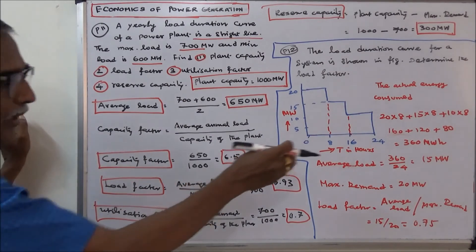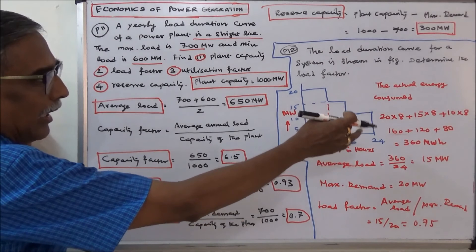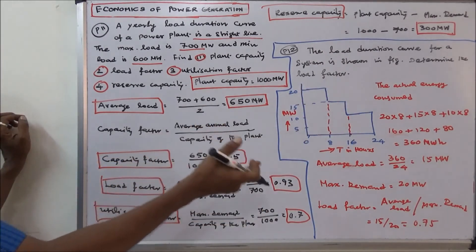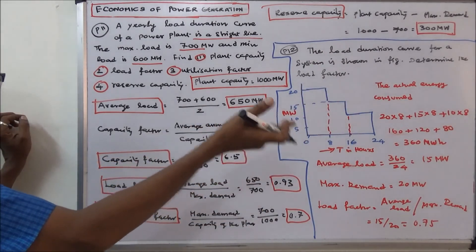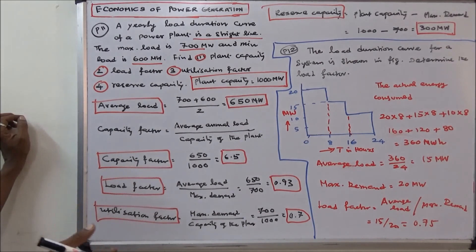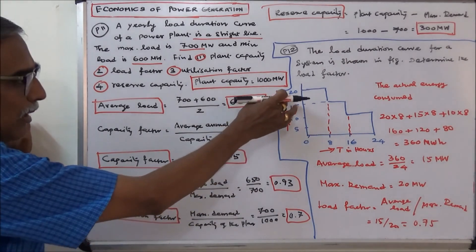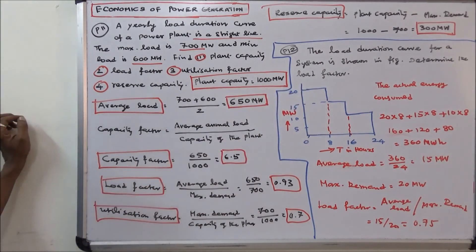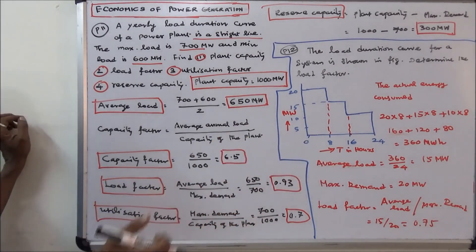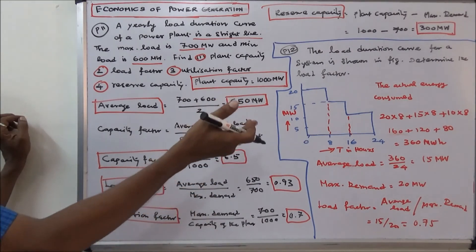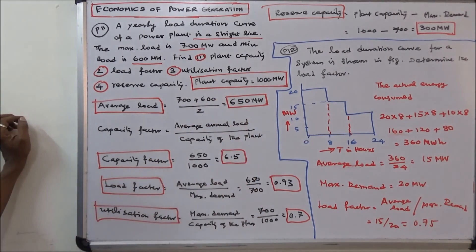The average load equals energy consumed in a day divided by 24: 360 divided by 24 equals 15 megawatts. The maximum demand is 20 megawatts. Load factor equals average load divided by maximum demand: 15 divided by 20 equals 0.75.